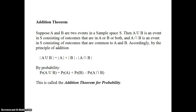Suppose A and B are two events in a sample space S. Then A union B is an event in S consisting of outcomes that are in A or B or both. And A intersection B is an event in S consisting of outcomes that are common to A and B. By the Addition Principle, the count of A union B equals count of A plus count of B minus count of A intersection B.